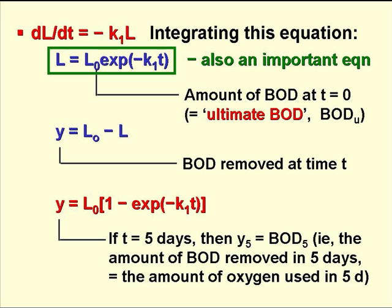We can integrate this equation to L equals L0 times e to the minus K1t, where L0 is the amount of BOD present at t equals zero, often called the ultimate BOD, or BODU. If Y is taken as L0 minus L, where Y is the amount of BOD removed at time t, then Y equals L0 times 1 minus e to the minus K1t.